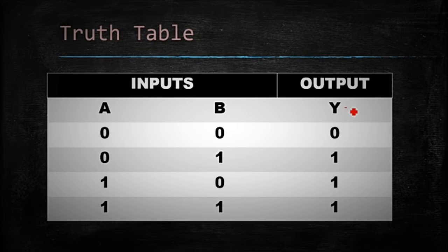As we know, Y equals A plus B. It means 0 plus 0 is 0. 0 plus 1 is 1. 1 plus 0 is 1. 1 plus 1 is 2. 2 means there is some number, it means we get some output.